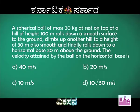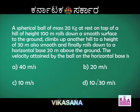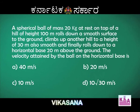Let us read the problem first. There is a spherical ball of mass 20 kg at rest on top of a hill which is at a height of 100 meters, and from there it rolls down a smooth surface to the ground, climbs up another hill to 30 meters, and finally rolls down to a horizontal base which is 20 meters above the ground. Find the velocity attained by the ball when it is on the base finally.